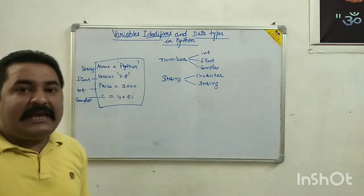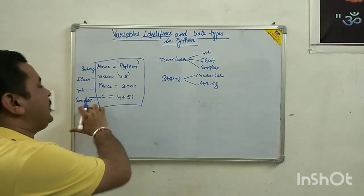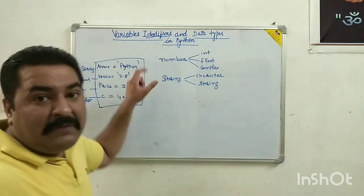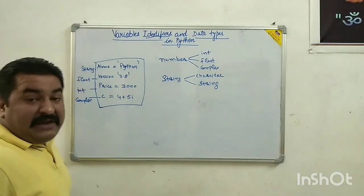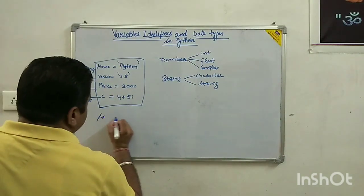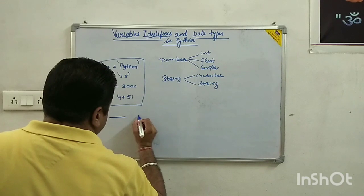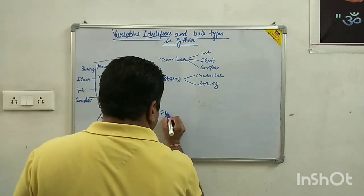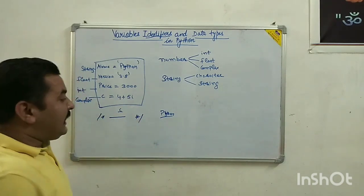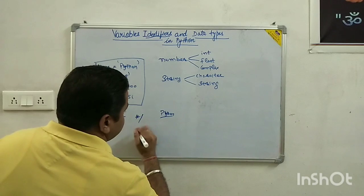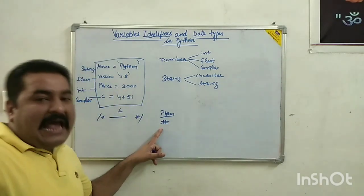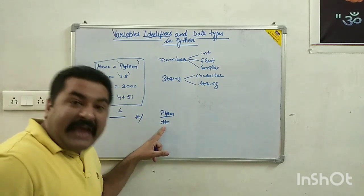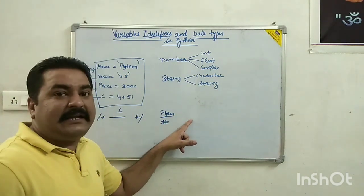These are the main data types in Python programming. For comments, in C programming we use a specific sign, but in Python we simply use the hash symbol to write a comment. If we need more comments, we use more hash symbols. Just write the hash tag and then write your comment in the Python program.